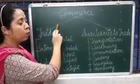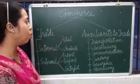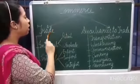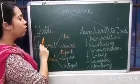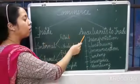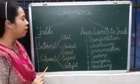Now we are going to start with the classification of commerce. Commerce is basically divided into two parts: the first one is trade, and the other one is auxiliaries to trade.